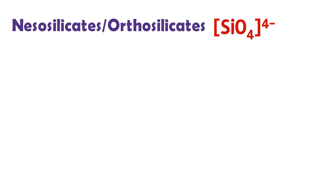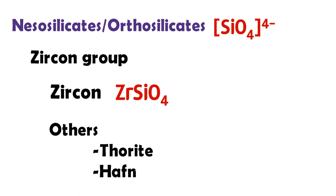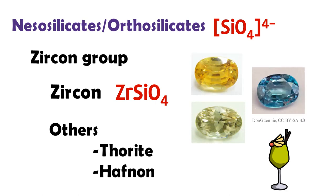The nesosilicate zircon group includes zircon, thorite, and hafnon. The natural colors of zircon vary — the original color is yellow-golden, red, brown, blue, and green.